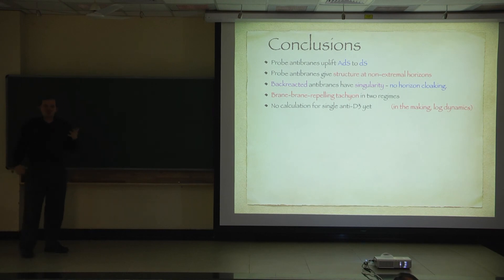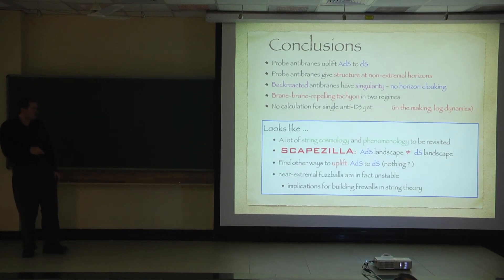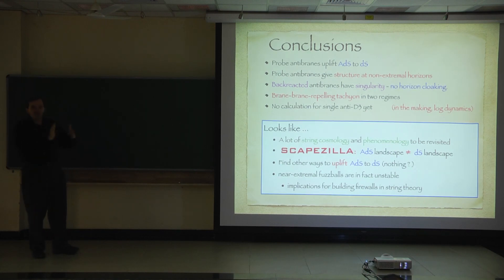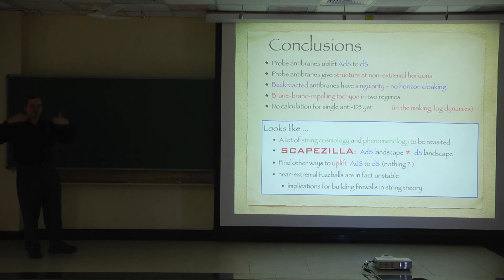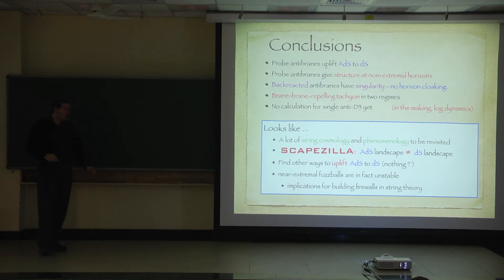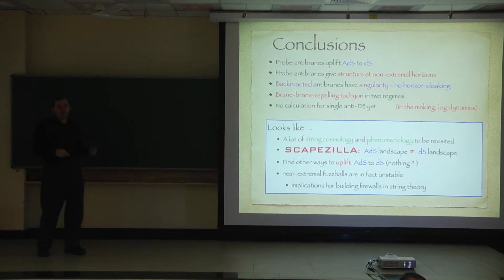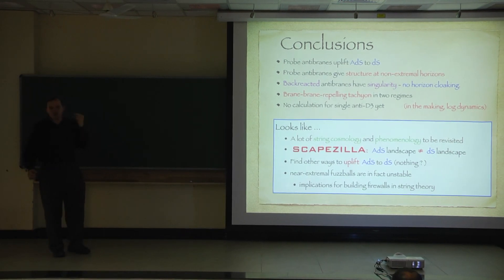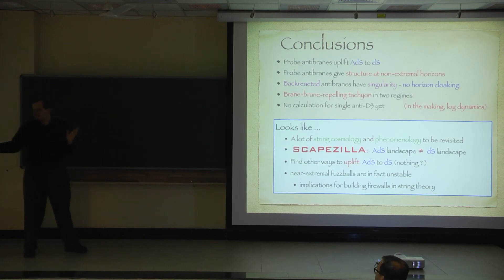All the arguments have been going against anti-D-branes. As a result, it looks like we have to revisit a lot of string cosmology and phenomenology — all these constructions using anti-branes and uplifting. If Scapezilla exists, string theory has an AdS landscape but it doesn't have a de Sitter landscape. All this understanding of reality via the anthropic principle has to be set aside and you have to go back to looking for a specific compactification describing the real world. We cannot hide our ignorance by invoking the anthropic principle — we have to go back to the way people used to do string theory a few years ago. Moreover, for non-extremal black holes, microstates are built using anti-D-branes, and the fact that anti-D-branes are unstable implies that these black holes will decay very fast — there's a very nice AdS-CFT interpretation of that.